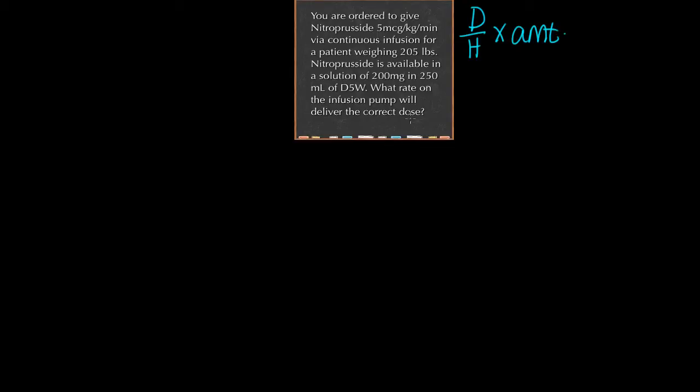Let's look at this question to decide what we're looking at. We know we're given an order for nitroprusside - the order is 5 mcg per kg per minute via continuous infusion. We know the patient weighs 205 pounds and we have on hand a solution of 200 milligrams in 250 mL of D5W. This is the information we're going to extract from the question to solve it.